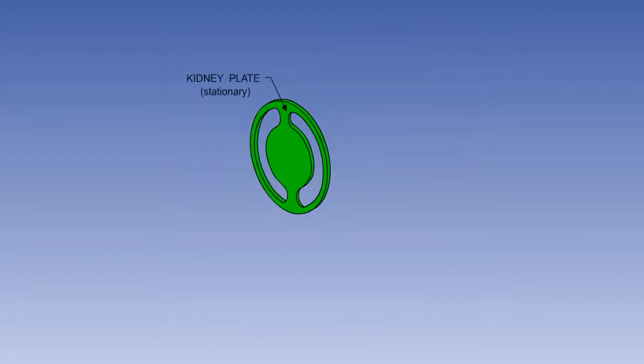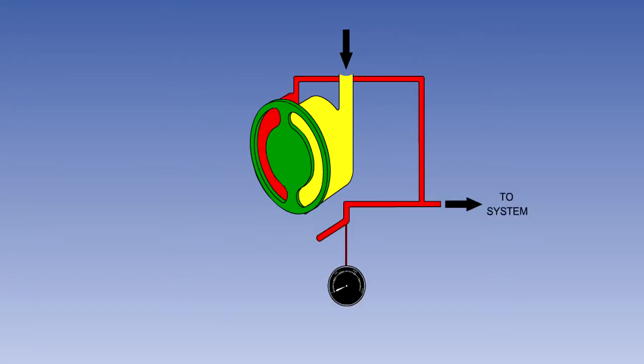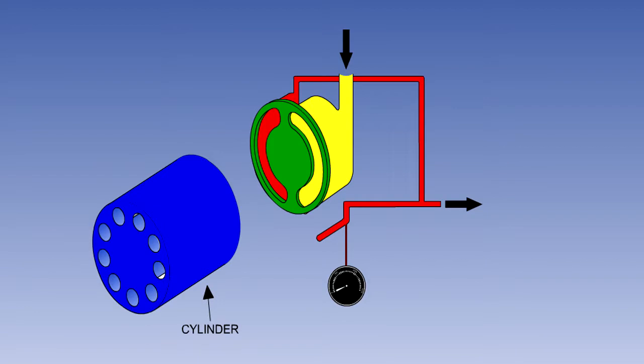The pump is made up of a number of components. There is a stationary kidney plate, so named because of the two kidney-shaped slots cut in it. The fluid supply from the reservoir enters the pump through one slot, and the pressurized fluid exits by the other. The cylinder block is rotated by whichever source is driving the pump. Cut into this block are a number of cylinders.